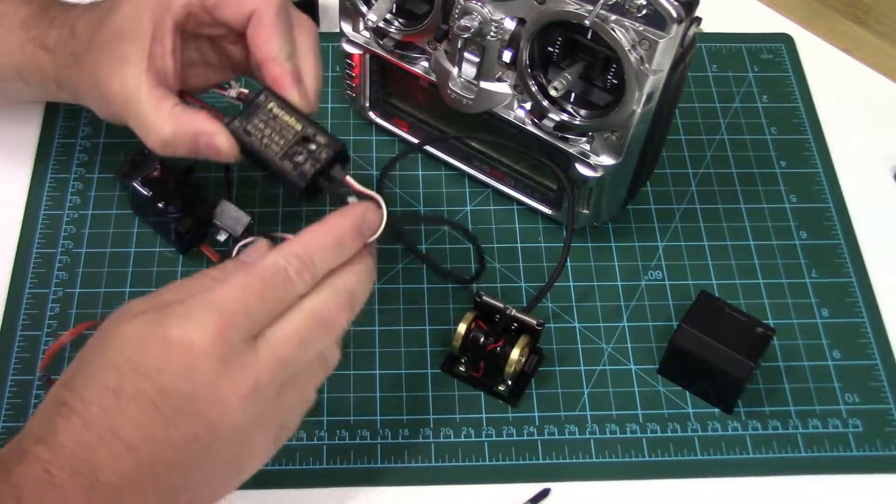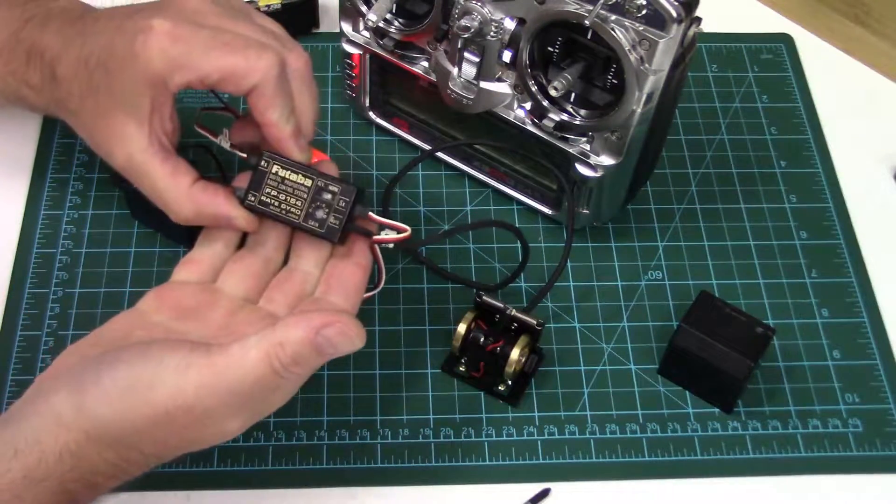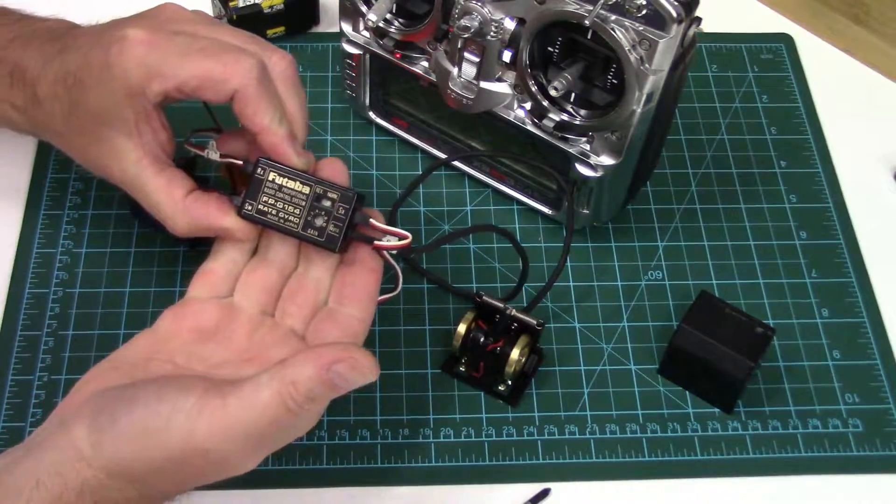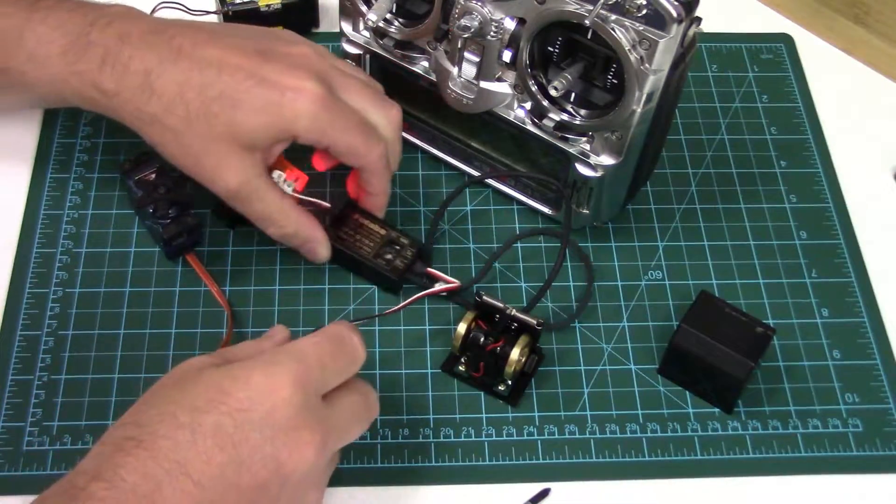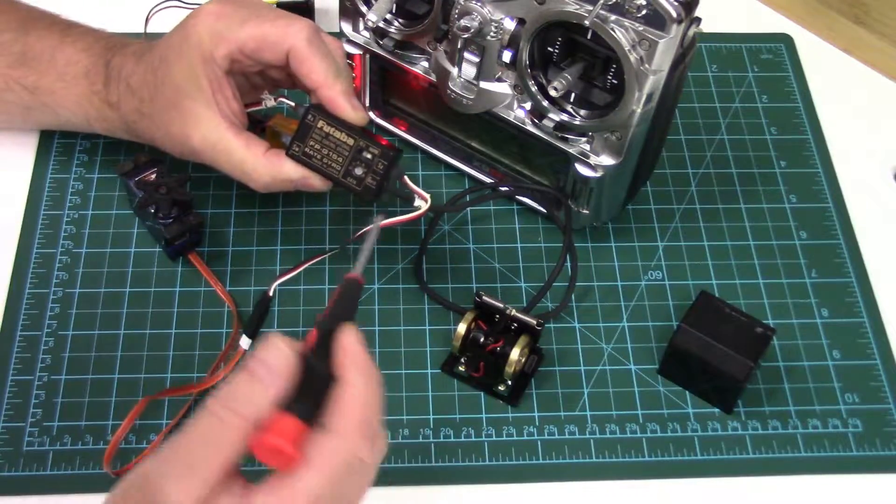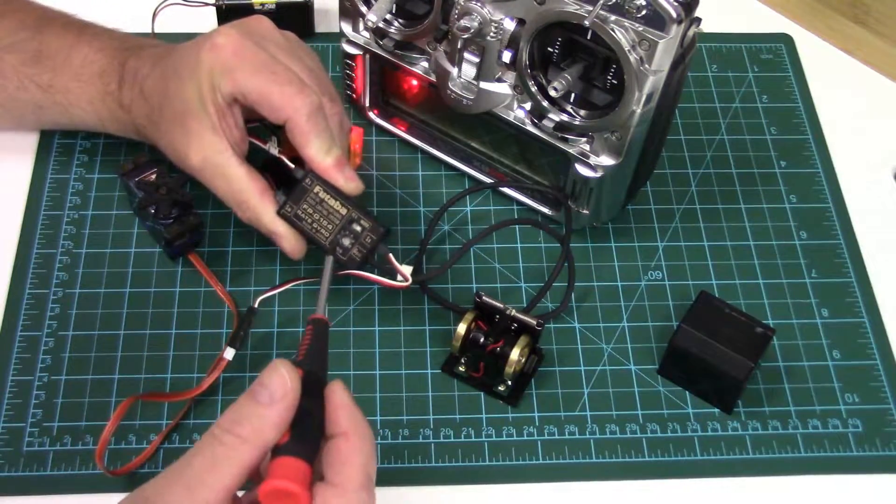So for anyone who's interested, this particular mechanical gyro is a Futaba FP G154. It's a pretty common one in the day. This one you didn't have the option to set the gain remotely from the radio.